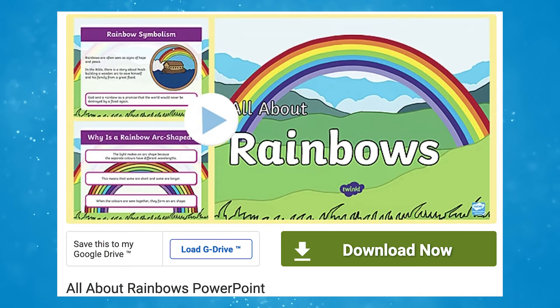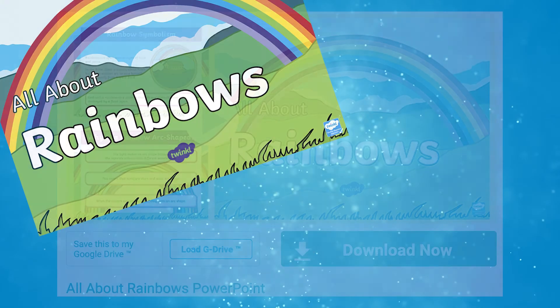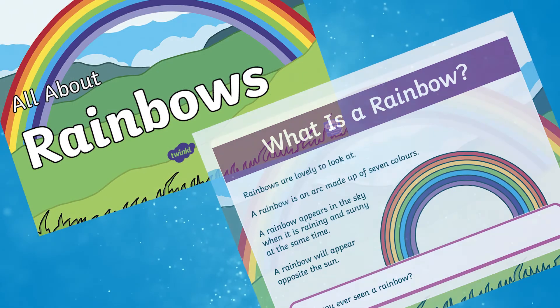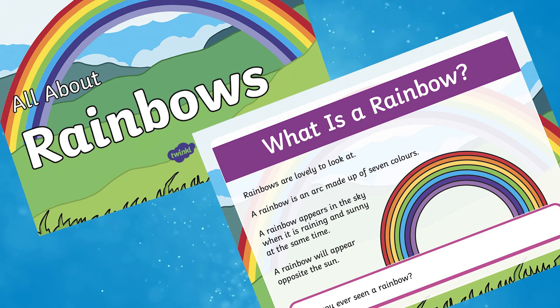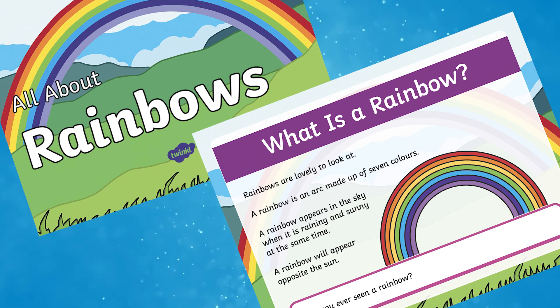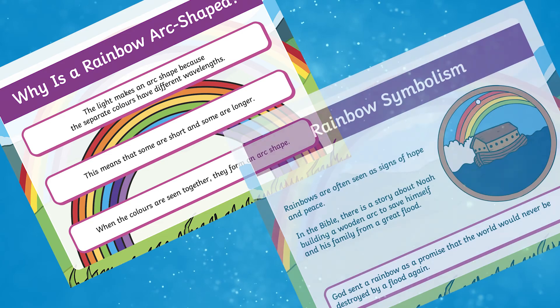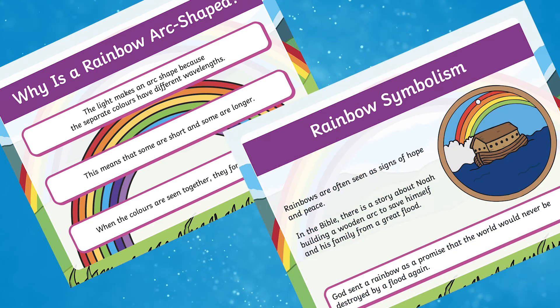We also have another version of this presentation tailored to Key Stage 1 children. This is ideal for teaching young children about how rainbows are formed and how they can remember the colours in the rainbow.